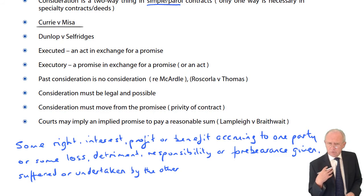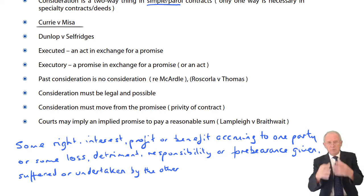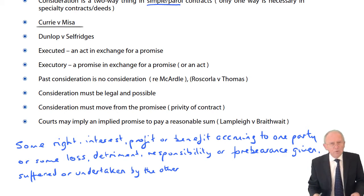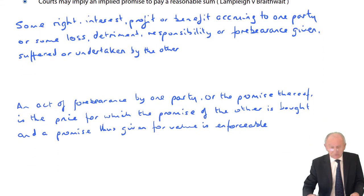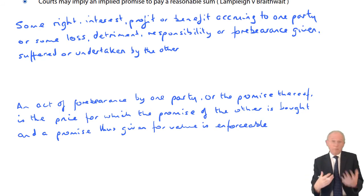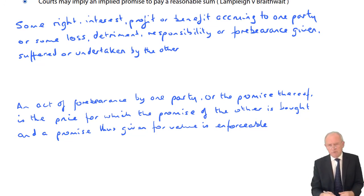Apparently, the Currie v Misa definition does not deal with the situation of a promise for a promise — where I promise to do something for you and you promise to do something for me. So in Dunlop v Selfridges we have an alternative definition: an act of forbearance by one party, or a promise thereof, is the price at which the promise of the other is bought, and a promise thus given for value is enforceable. That apparently deals with the promise-for-a-promise situation.